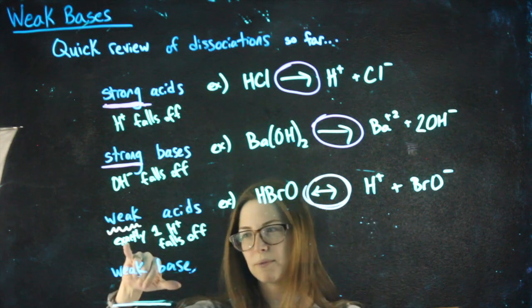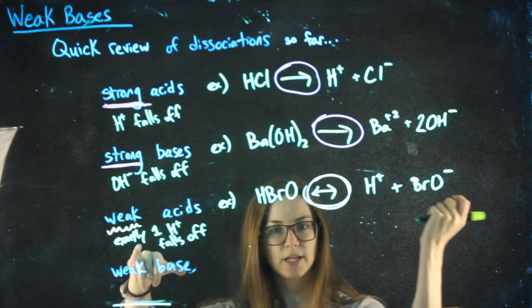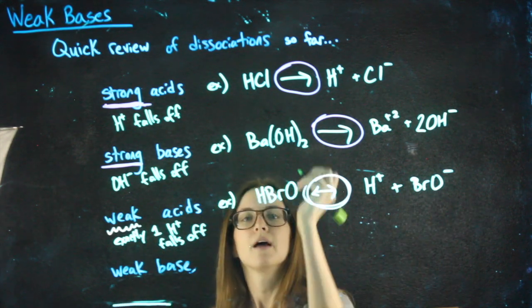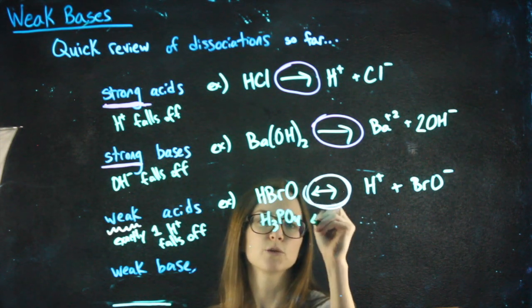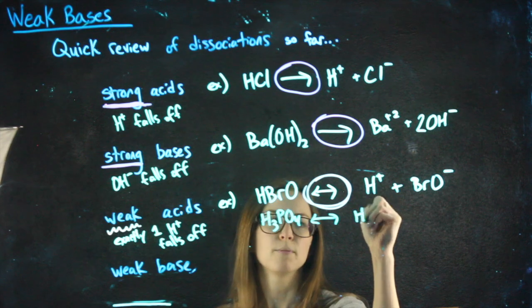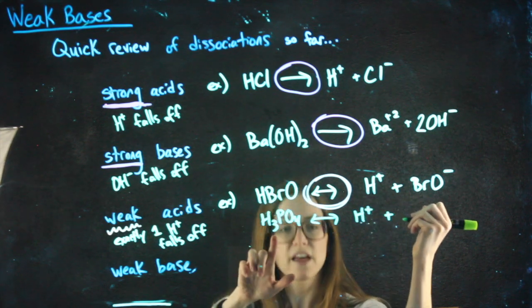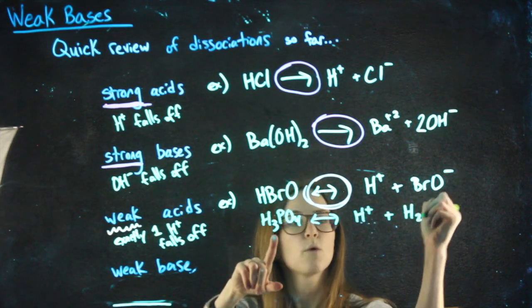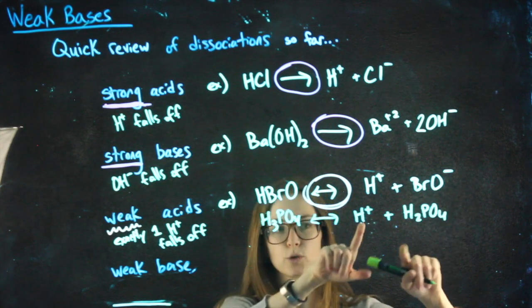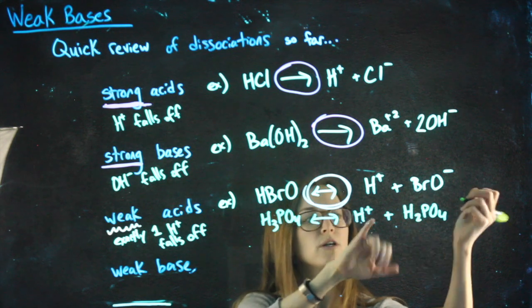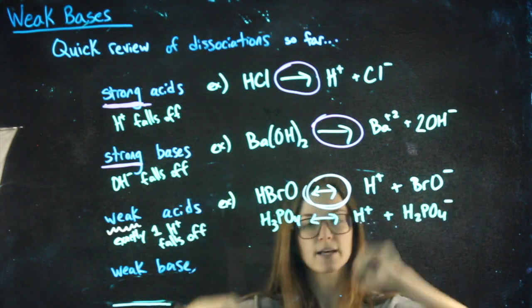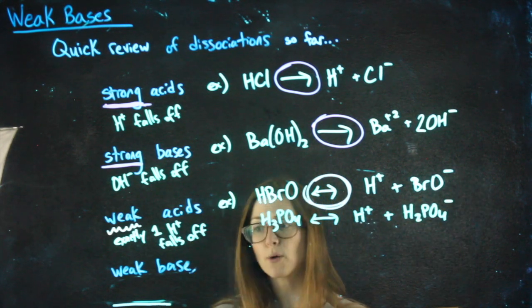Another example of what I mean by just exactly one H plus falling off is if we had H3PO4, which is a weak acid dissociating. It would be H plus, and the other two H's would stay with the PO4. So it's exactly one H plus falling off. And since this is a plus that we started neutral, we just lost one H plus, that would be a minus.